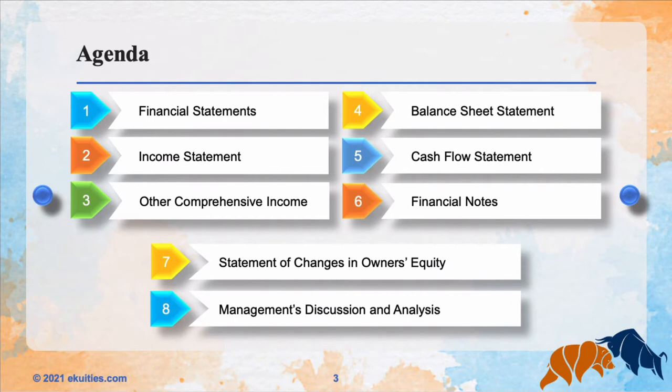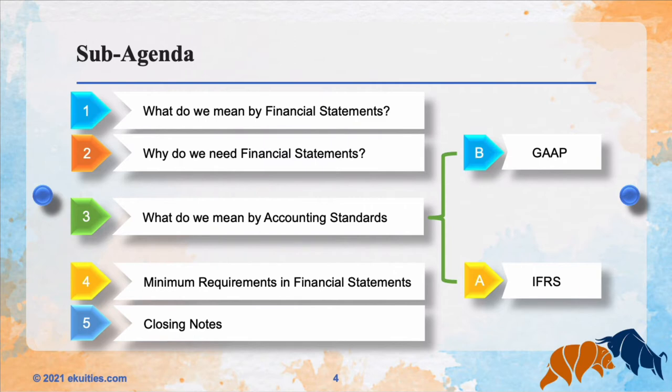What are the plans for today? Today we are going to see what we mean by Financial Statements, why we need Financial Statements, what we mean by Accounting Standards — we have two: GAAP and IFRS — and whether there are minimum requirements in Financial Statements, or if any company could present whatever it feels like presenting. We will see that, and as usual, I will end my video with a closing note.